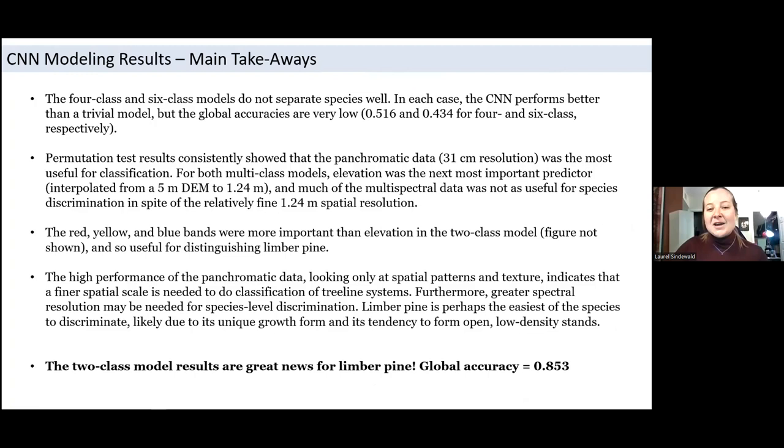Okay, so sorry for the text-heavy slide. This may only be helpful for folks watching the YouTube video who can pause, but to summarize, the four and six-class models do not perform particularly well and rely mostly on the high spatial resolution panchromatic data, ignoring the multispectral data that we hoped would be useful for discriminating species. This may mean that the spatial or spectral resolution is too coarse for this classification task. However, we did see better model performance for the two-class model for limber pine, perhaps because of its unique growth form and tendency to form in open, low-density stands. Of course, applied at a landscape scale, if we are not relying on the spectral data, this could mean that limber pine will be confused with lodgepole pine at other treeline sites. Our next step with this model is to obtain WorldView-3 imagery for the same community but in September, when deciduous plants will be senescing. We will also obtain 8-band WorldView-3 shortwave infrared or SWIR data, and more on this shortly.